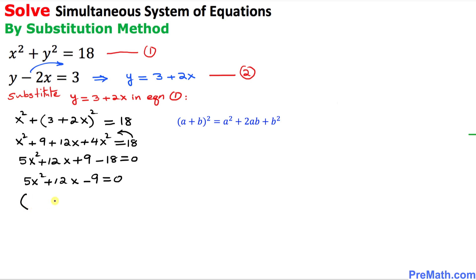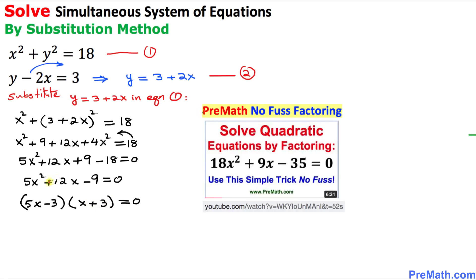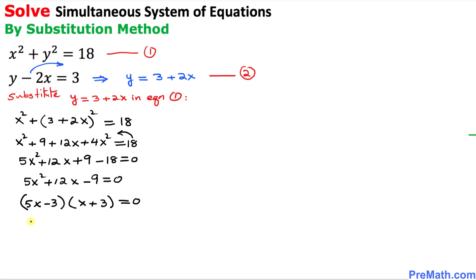This is a quadratic equation that can be factored. The factors are (5x − 3)(x + 3). If you'd like to know how to factor these, visit my YouTube channel and search pre-math no-fuss factoring — there are videos that explain it in a super easy way.